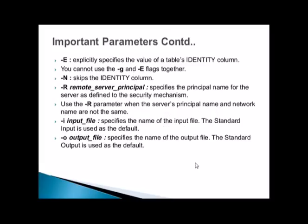The -e flag explicitly specifies the value of the table's identity column; -e and -g cannot be used together. The -g flag skips the identity column. The -r flag specifies the remote server principal — useful in principal/mirror configurations where the principal name and network name differ. The -i flag specifies the input file (standard input is the default), and -o specifies the output file (standard output is the default).